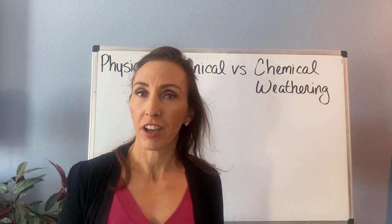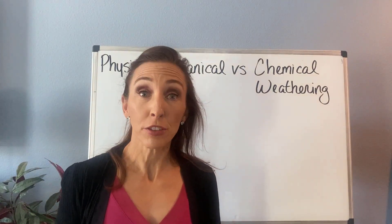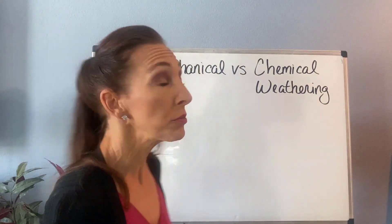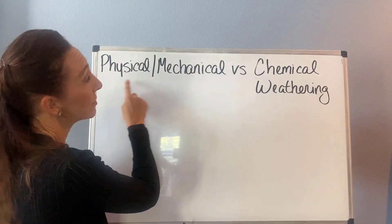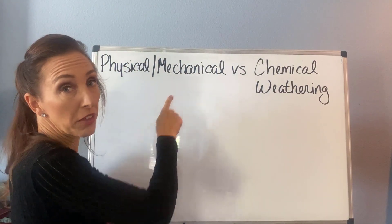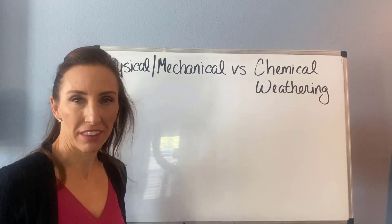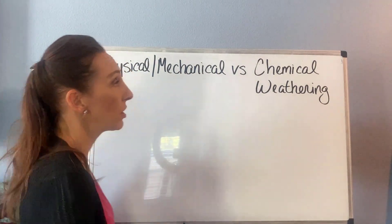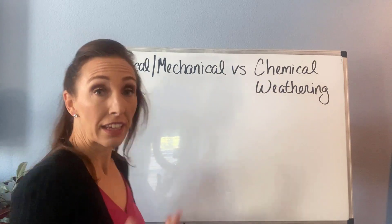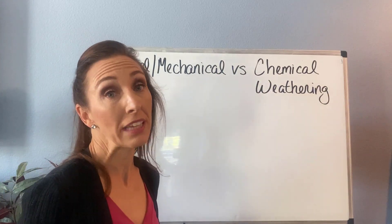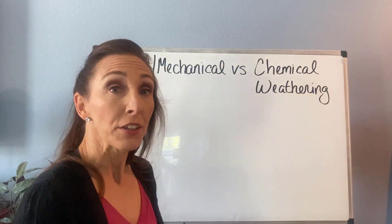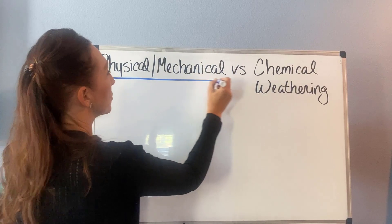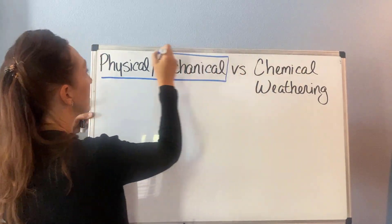When we learn about weathering in geology, things are weathered two different ways. The first way is either physical or mechanical weathering — it means the same thing, and different texts use different terms. The second type is going to be chemical weathering. So let's first look at physical and mechanical weathering.